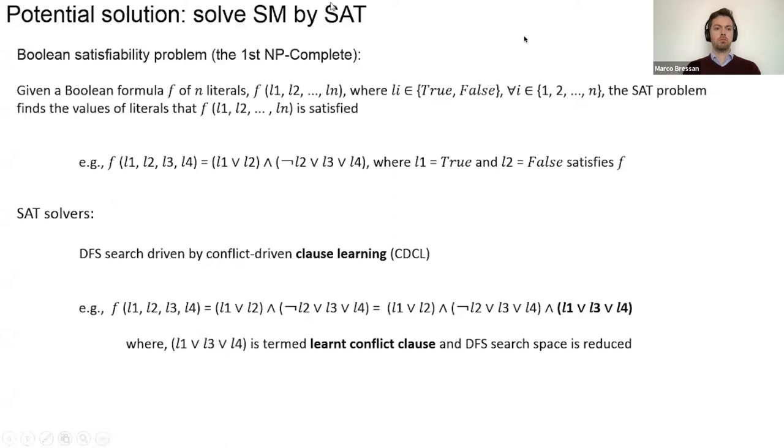Here we propose a potential solution by using SAT, which is the Boolean satisfiability problem, the first NP-complete problem, to solve the subgraph monomorphism. The Boolean satisfiability problem is given a Boolean formula F with some literals L1, L2 until Ln. We assign true or false to each of the literals to satisfy a function of a Boolean formula. For example, F(L1, L2, L3, L4) equals (L1 or L2) and (not L2 or L3 or L4). We can identify when we assign L1 to be true and L2 to be false, then we can satisfy F.